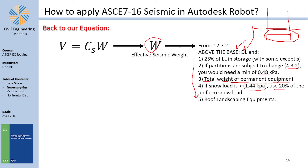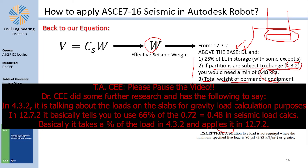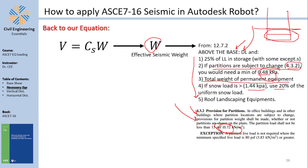A code ambiguity worth noting: section 12.7.2 references section 4.3.2 for partitions subject to change, but 4.3.2 itself specifies a different minimum value — it's unclear which governs. This is a question the speaker is still working through and invites discussion.